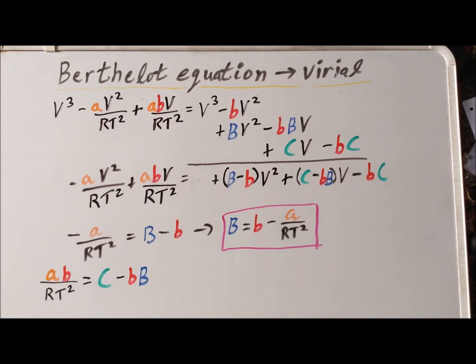Next, we set equal the coefficients of the linear term in V, V to the first power. So that's going to give us, so we compare this term and this term. So we know the coefficients have to be equal. So that gives us that A times little B divided by RT squared is equal to C minus little B times big B. And again, we can solve relatively quickly by adding little B times big B to each side.